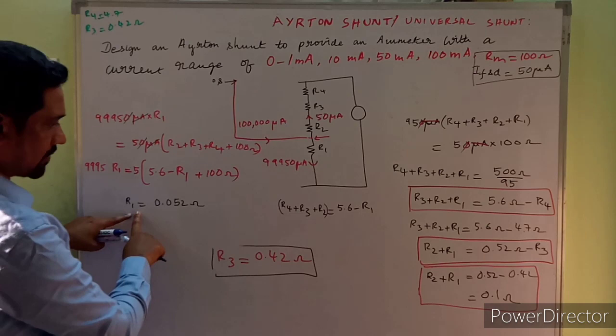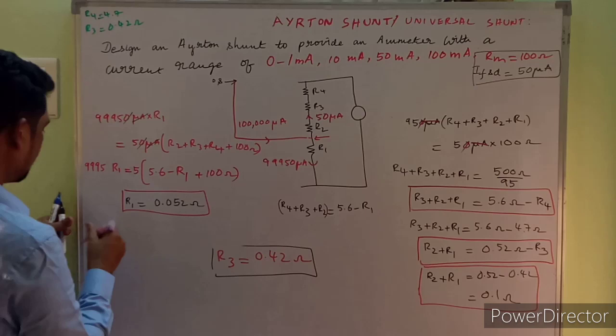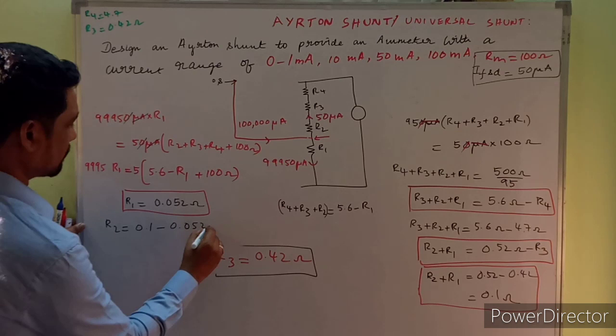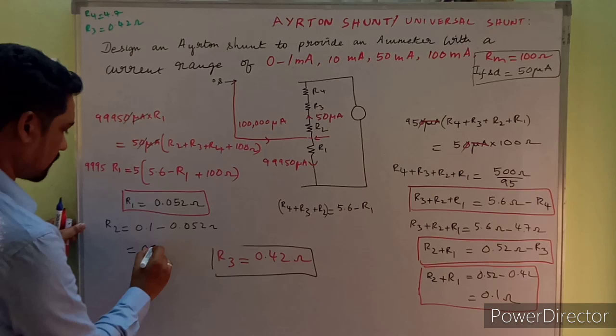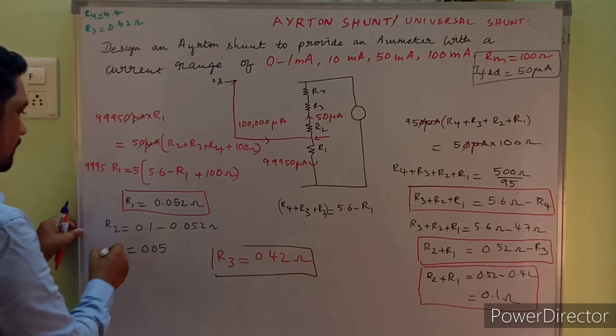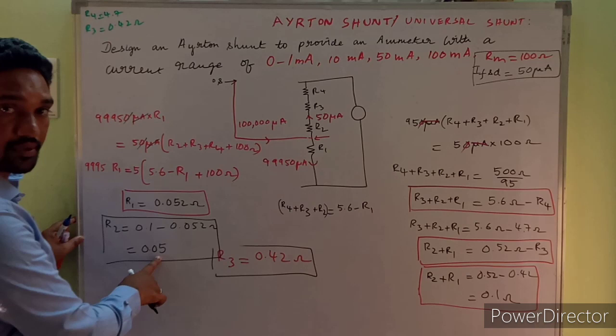Plugging R1 = 0.05 ohms into R2 + R1 = 0.1 ohms, we get R2 = 0.1 − 0.05 = 0.05 ohms. R1 and R2 are approximately equal. Note: small decimal rounding during calculation may give R2 as either 0.04 or 0.05 ohms. The summary of results: R4 = 4.7 Ω, R3 = 0.42 Ω, R2 ≈ 0.05 Ω, R1 ≈ 0.05 Ω.